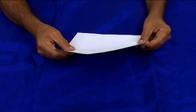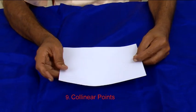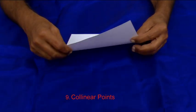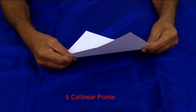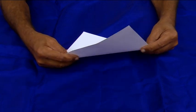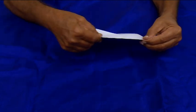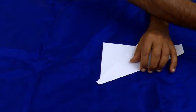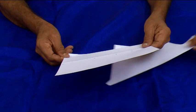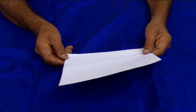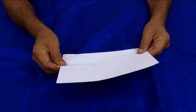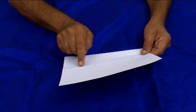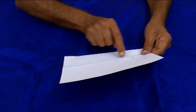Now we are given many points that lie on a line segment. Only one line can pass through these points. This line segment passes through the given points L, N, P, Q. So these points L, N, P, Q are called collinear points — they lie on the line segment, so they are collinear points.